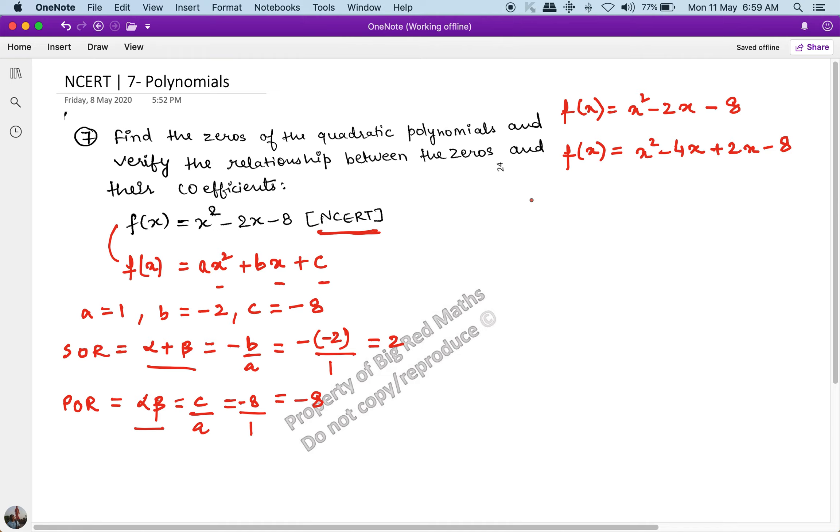If you do not understand this concept really well, go back and refer to that playlist in the description. So f(x) now becomes, I can take x common from the first two terms. If I take x common, I get x(x - 4), and from the second two terms, if I take +2 common, I get (x - 4). Now I can take (x - 4) common from everywhere, so it becomes (x - 4)(x + 2).